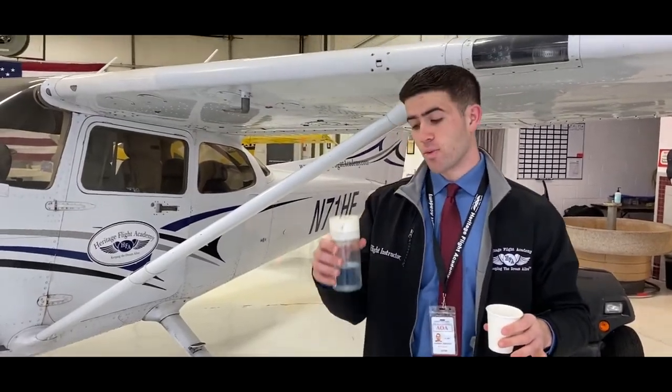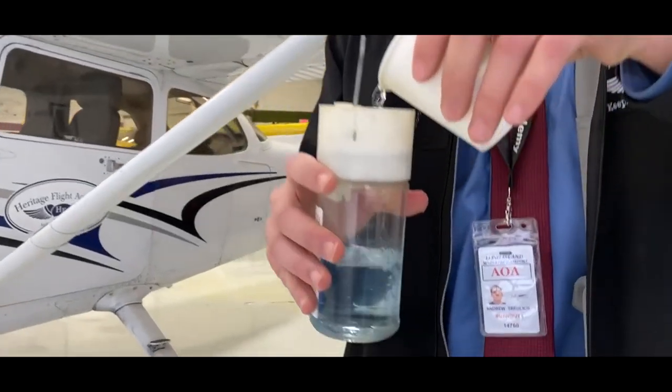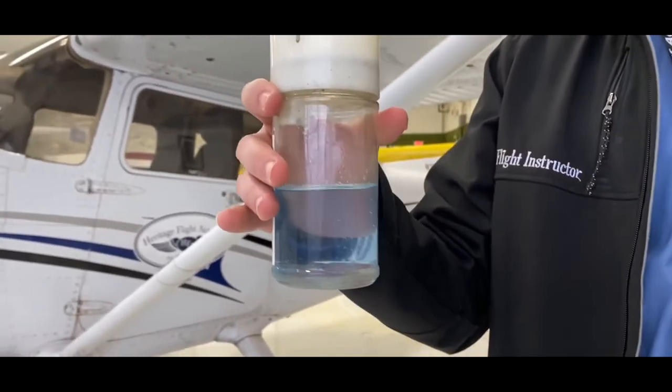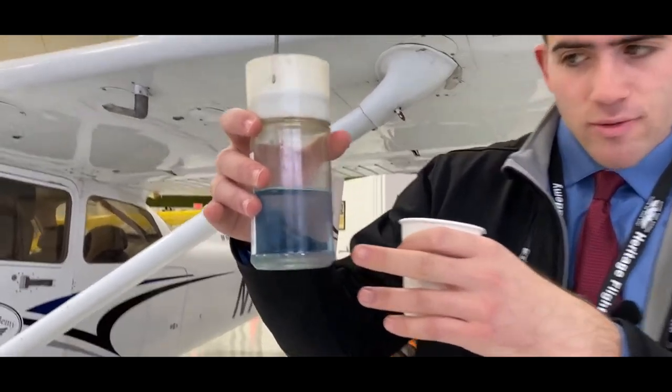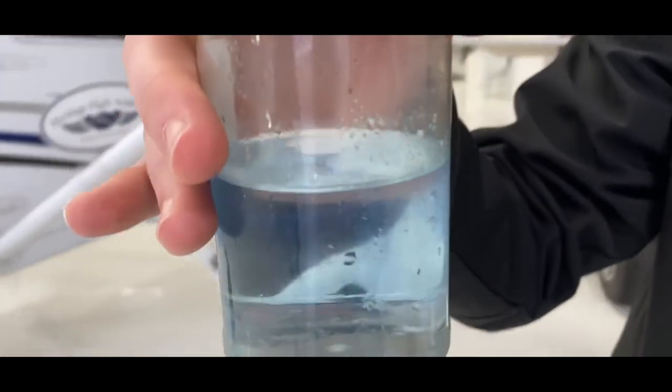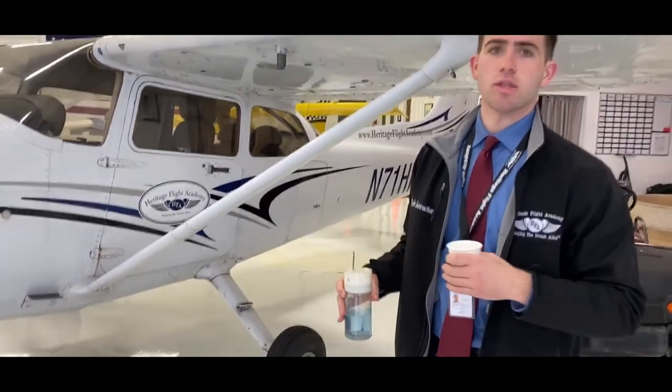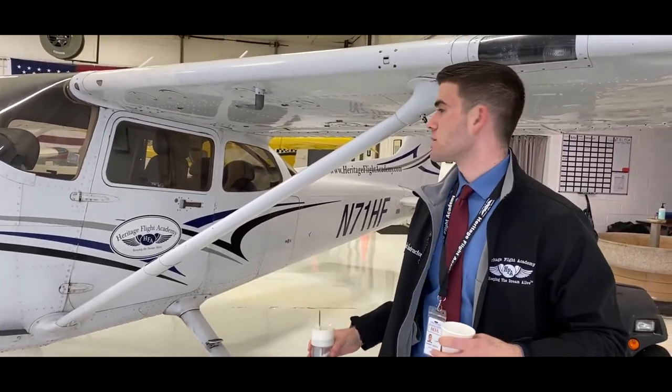So now I'll show you what happens if there's water inside. So I'm going to pour some water in. Water is heavier and denser than the fuel so you're going to see it collects on the bottom, and if you look closely there are bubbles indicating that there is water inside of the fuel. So the correct measure to take in this scenario is to continue sumping the tank until there's no water present for at least several sumps.